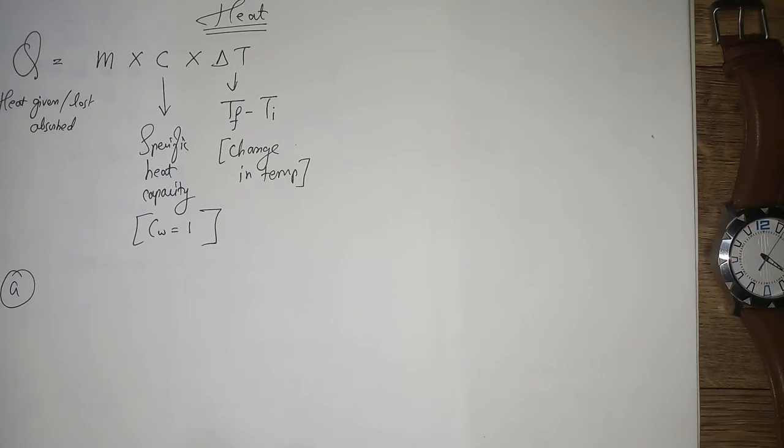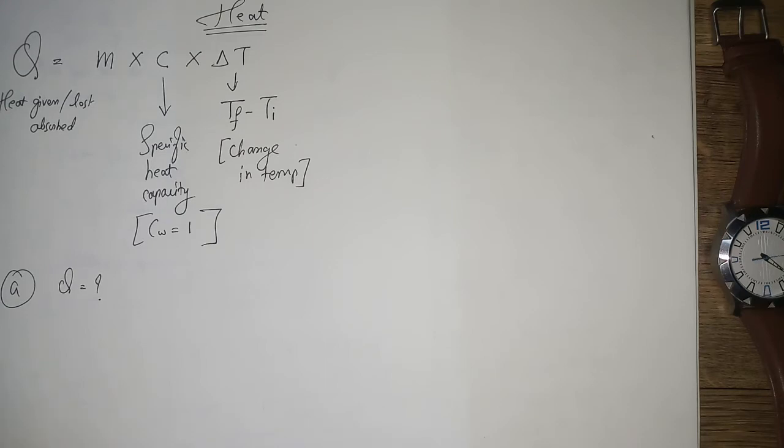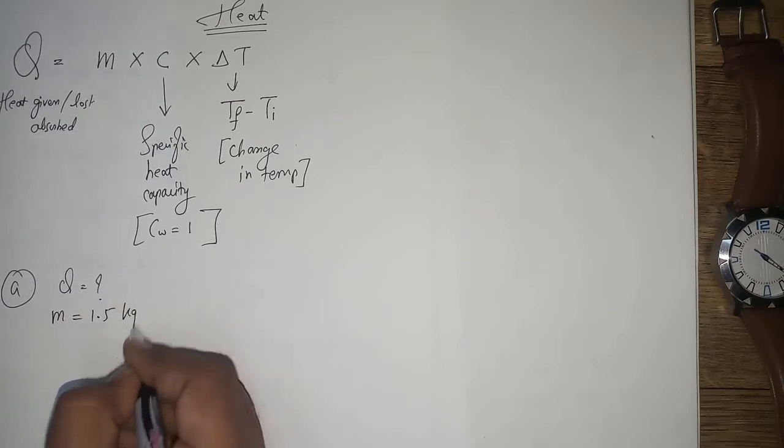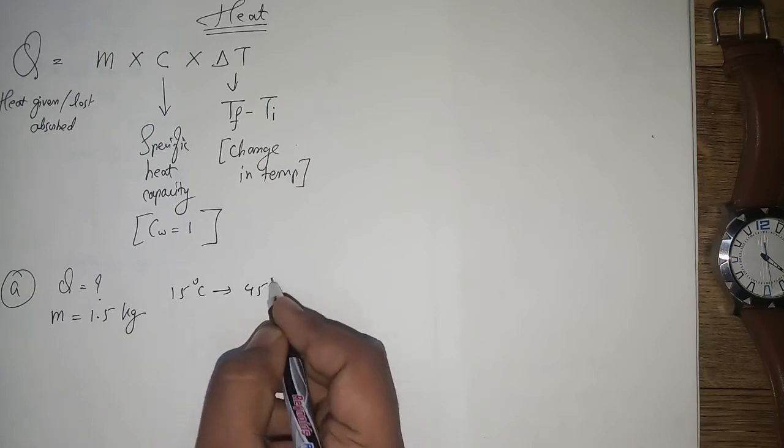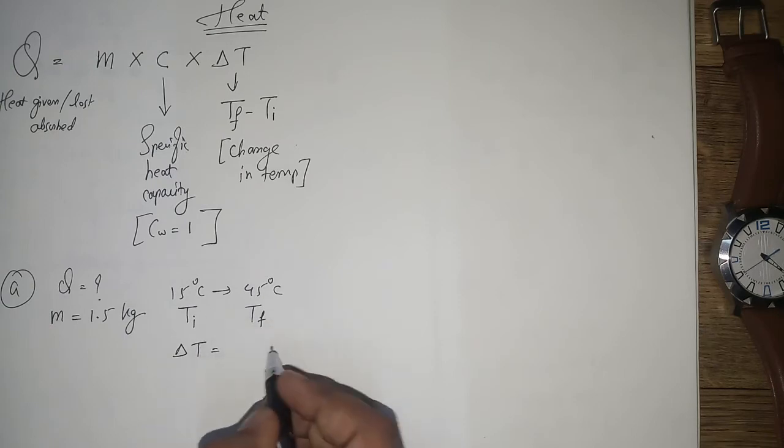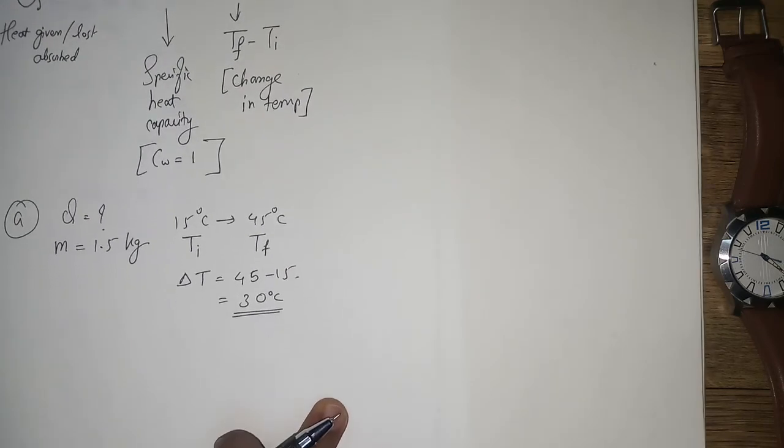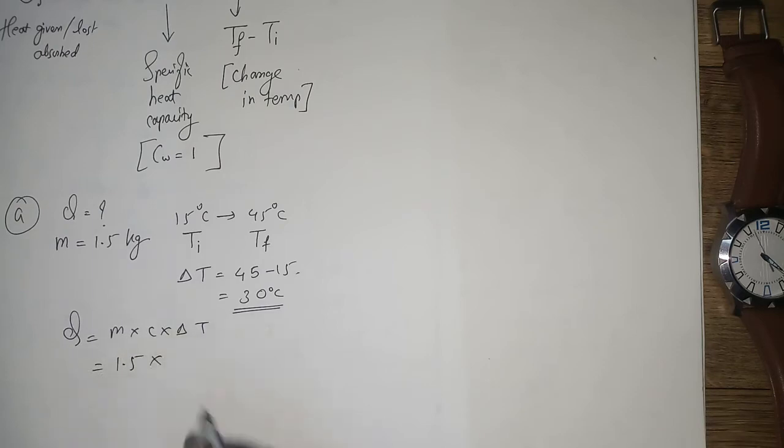How much heat will be needed to raise the temperature of 1.5 kg of water from 15 degrees Celsius to 45 degrees Celsius? Delta T is temperature final minus temperature initial: 45 minus 15 equals 30. Put this in the formula: Q equals m times c times delta T. Q equals 1.5 times 1 times 30 equals 45 kilocalories.